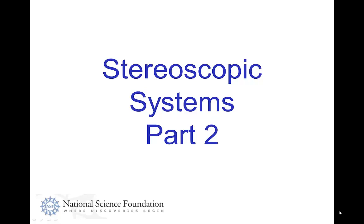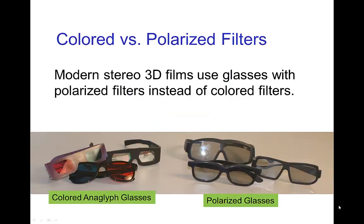Stereoscopic Systems, Part 2. In Part 1, we discussed anaglyph systems where you see different images in each eye using colored filters. But modern 3D films, instead of using colored filters, tend to use polarized filters.